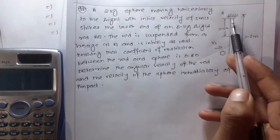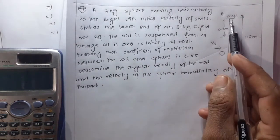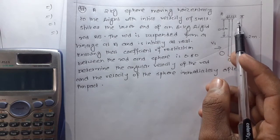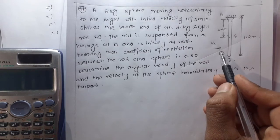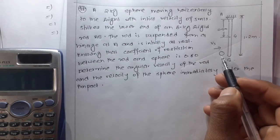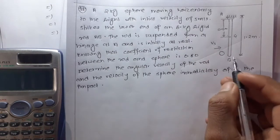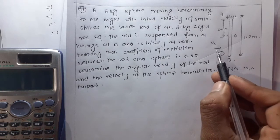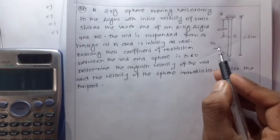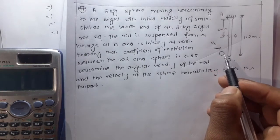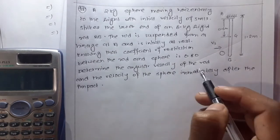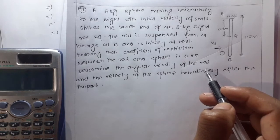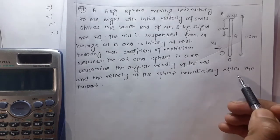So the question is, the rod is 0.8 kg and the sphere is 0.2 kg which is initially 5 m per second velocity in the horizontal direction. We have to find the angular velocity of the rod and the velocity of the sphere immediately after the impact.